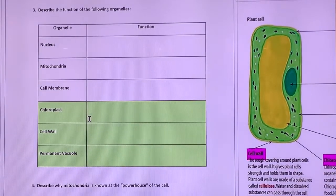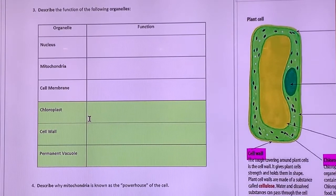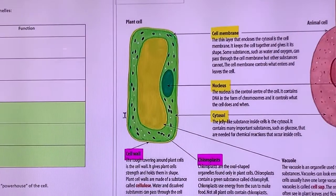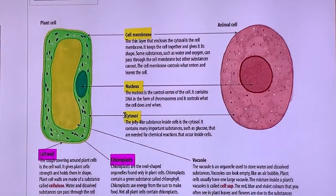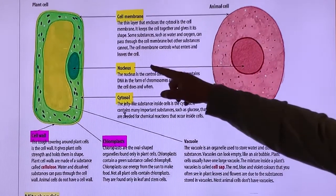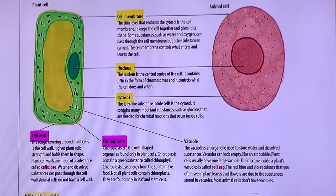This one here says describe the function of the following organelles. This was a diagram that's in that page, in our OneNote, but I've just copied and pasted it in because it covers most of these. You have got both animal and plant cells have a cell membrane. Remember the point of the cell membrane is it lets things in and out. They both have a nucleus. This is where the DNA is contained.